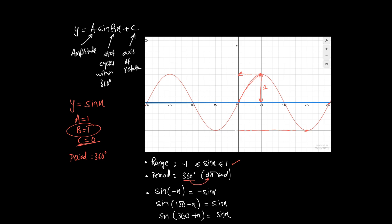We've discussed that 360 degrees is equivalent to 2π radians and the period is 360 degrees. From the previous video, the identity sin(-x) = -sin(x) means that sine of a negative angle gives you the negative of what you get for the positive angle — the same magnitude but opposite sign.